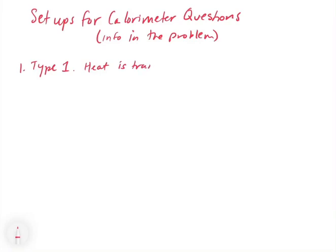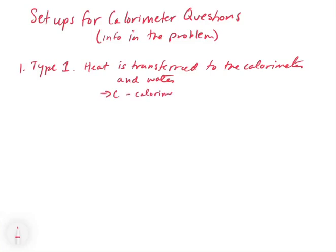Type 1 is where you have heat being transferred to the calorimeter and water. In this case, you're going to get two different heat capacities: big C for the calorimeter with units of joules per degree Celsius, and little c for the water in the calorimeter with units of joules per gram degree Celsius. The problem will say something like heat is transferred to a calorimeter that contains 50 grams of water, giving you both a calorimeter heat capacity and the specific heat capacity of water, 4.184 joules per gram degree Celsius.